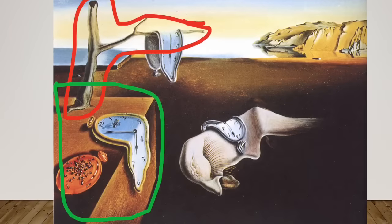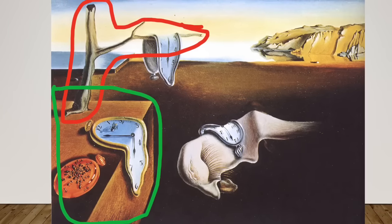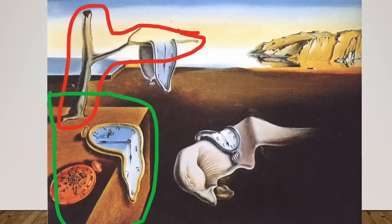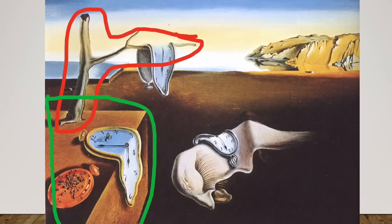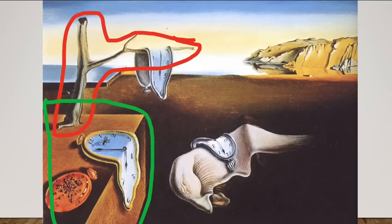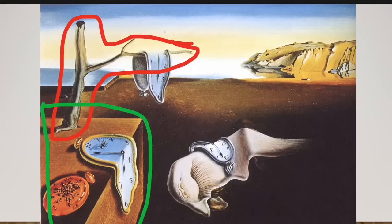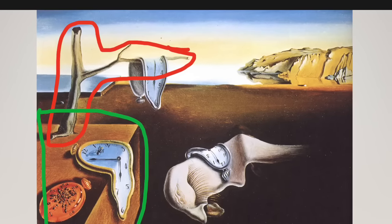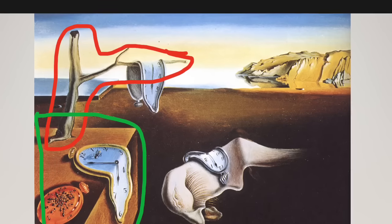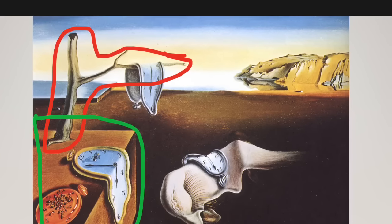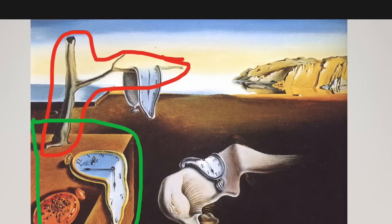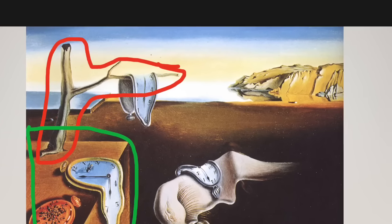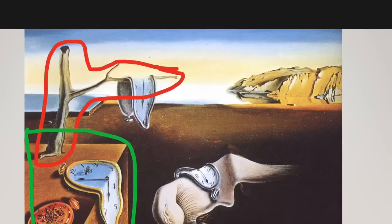Another interesting element is the tree and what it grows from — sometimes described as a box and other times as a table. Some analysis describes it as a juxtaposition of nature and man-made objects, where nature grows out of something man-made, which is not natural at all. While it is sprouting from the table, the tree is dead and barren. I think it represents how through the influence of man we have altered the natural path of things, and some would argue we have even killed nature — a hat tip from Dali to environmentalist philosophies of his time.